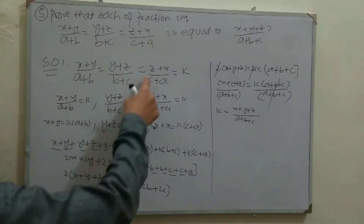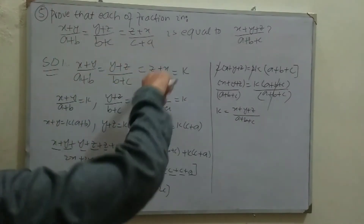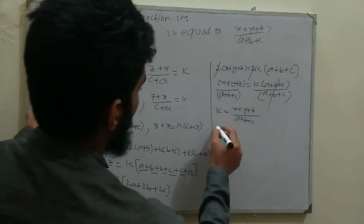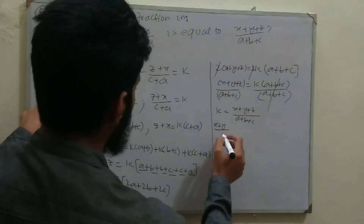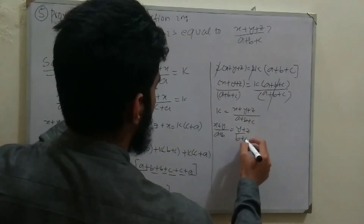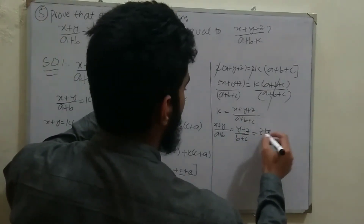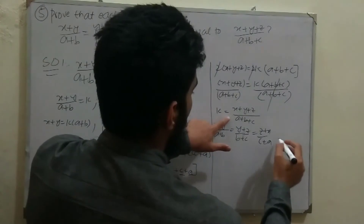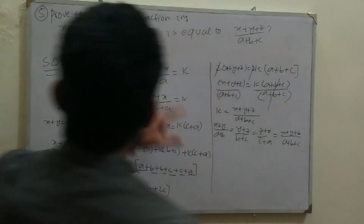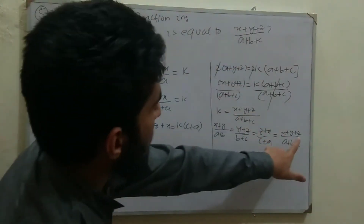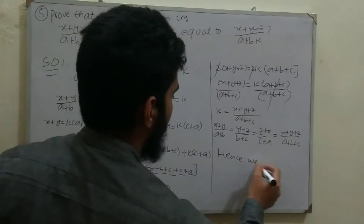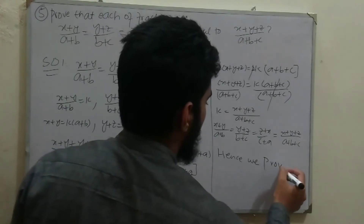Since we supposed (x+y)/(a+b) = (y+z)/(b+c) = (z+x)/(c+a) = k, substituting the value of k gives (x+y)/(a+b) = (y+z)/(b+c) = (z+x)/(c+a) = (x+y+z)/(a+b+c). Hence proved.